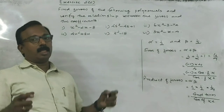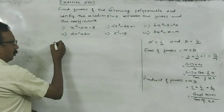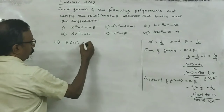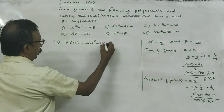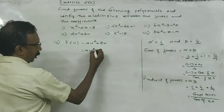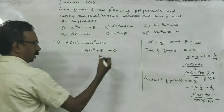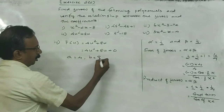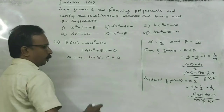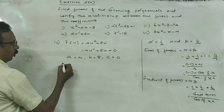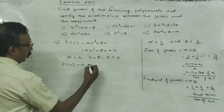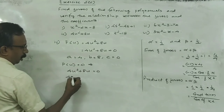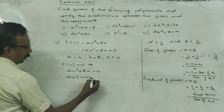Third question — we have P of U equal to 4U squared plus 8U. The standard form is U squared plus AU plus 0. So A is equal to 4, B is equal to 8, C is equal to 0. To find the zero of this polynomial, put P of U equal to 0, which implies 4U squared plus 8U is equal to 0. Here, 4U into U plus 2 is equal to 0.